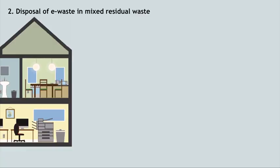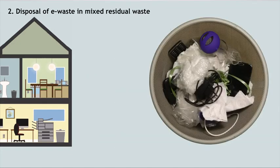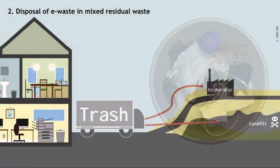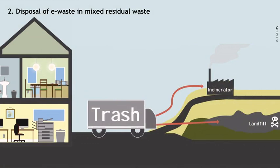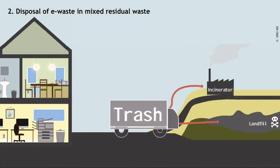The second practice involves disposing of e-waste in mixed residual waste, such as shown here in this bin full of paper, plastics, and e-waste. Small equipment such as lamps, USB sticks, phones, electronic toothbrushes, etc. are often thrown into normal dustbins. Often this trash is brought to landfills or incineration plants, leading to a loss of potential resources and negative environmental impacts. It is estimated that 0.7 million tons of e-waste are handled like this in the European Union, and the amount disposed of in waste bins is unknown for other regions.